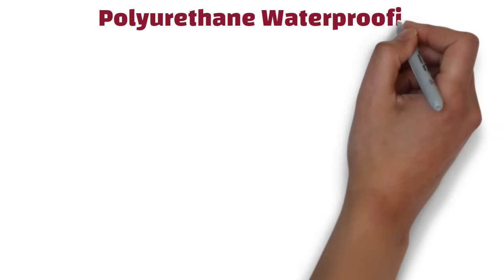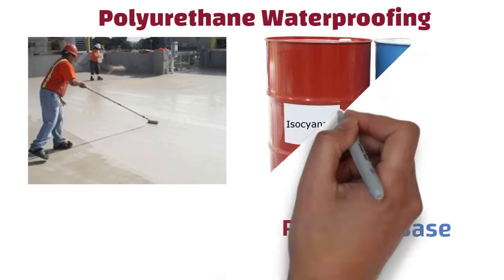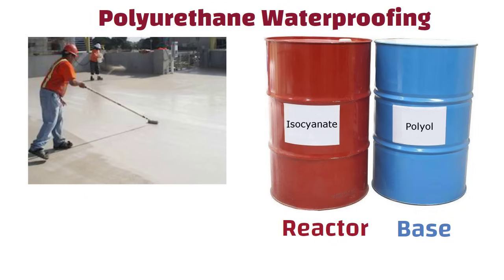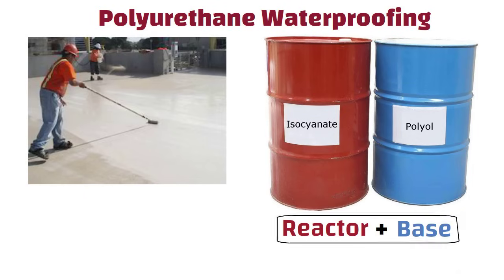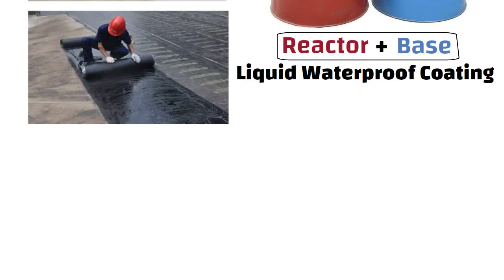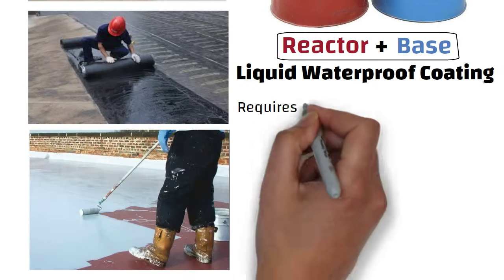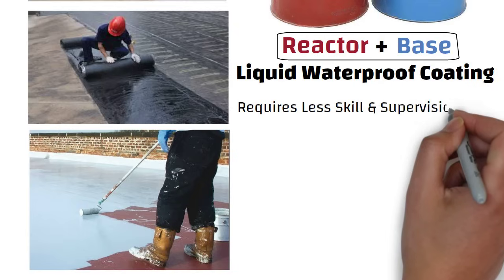Polyurethane waterproofing. Polyurethane is made up of two components: base and reactor. Polyol acts as a base while isocyanide is the reactor component. The combination of both these in a specific design ratio creates a liquid coating for waterproofing applications. Unlike other waterproofing systems like sheet membranes and liquid applied membranes, this polyurethane application requires comparatively less skill and supervision.